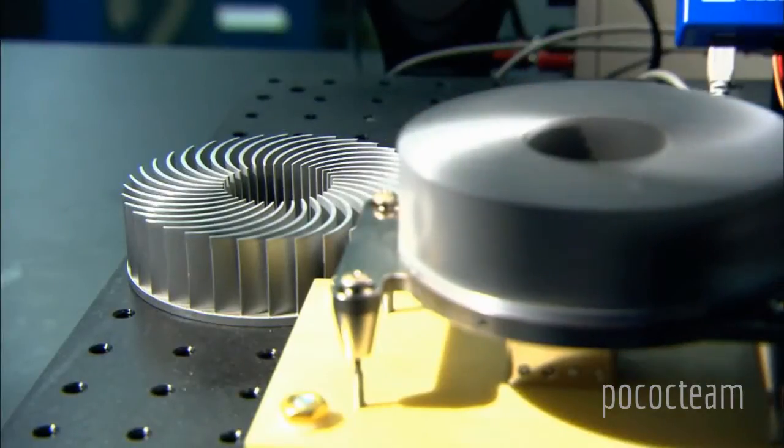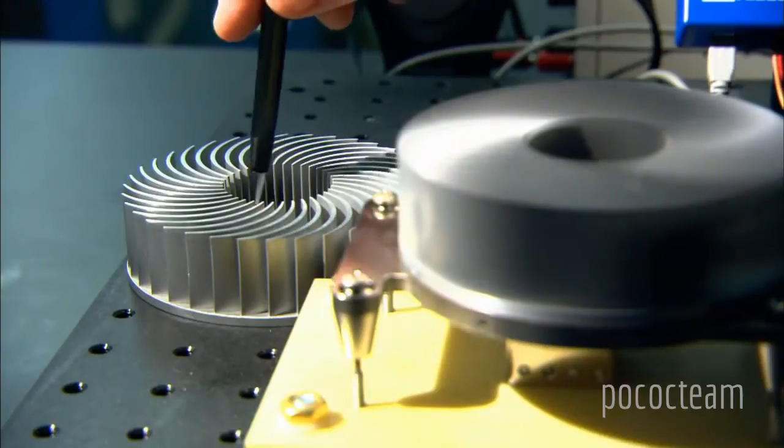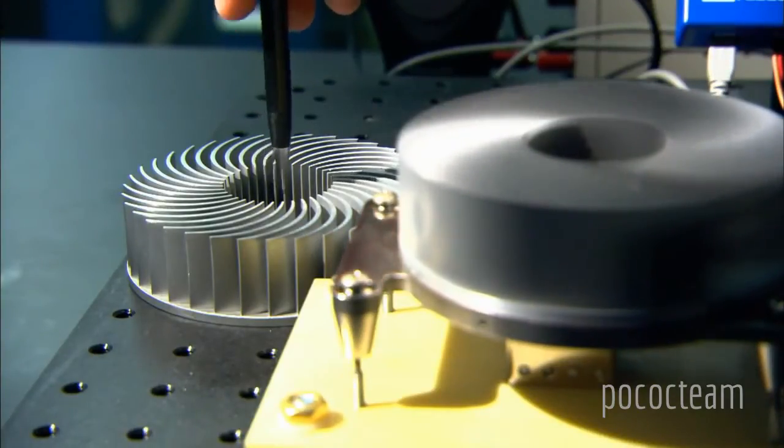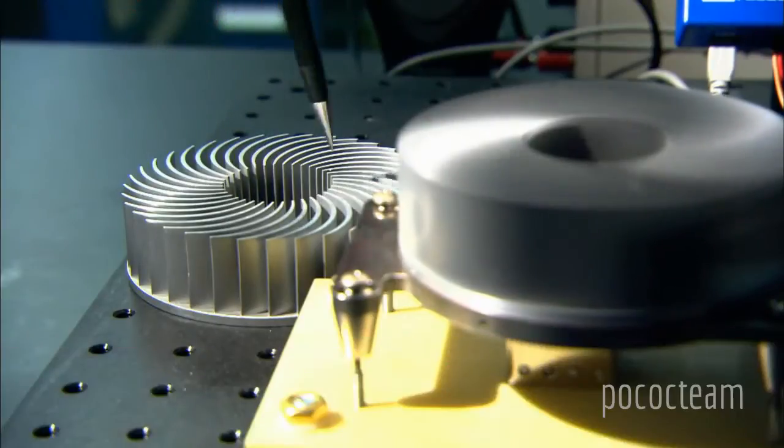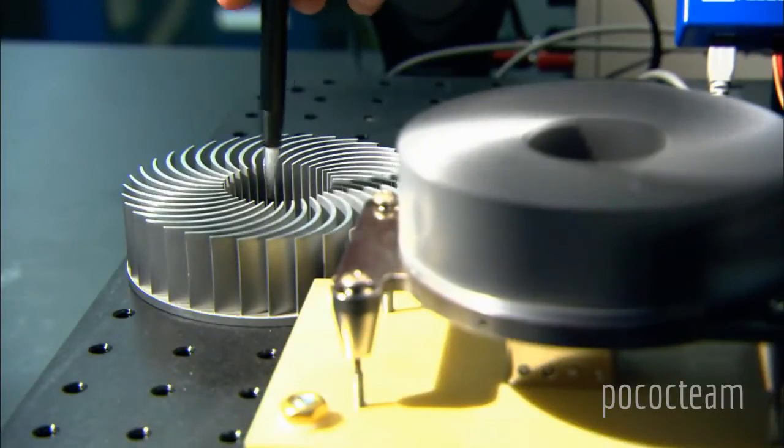When this spins, it draws air down into this sort of eye region, and then the air is ejected forcefully in the radial direction through all these fins. That gives you your cooling effect.